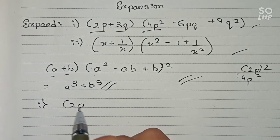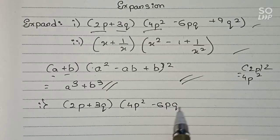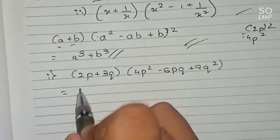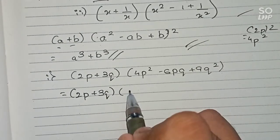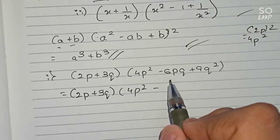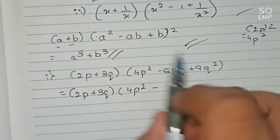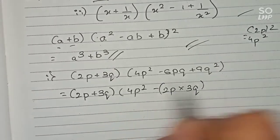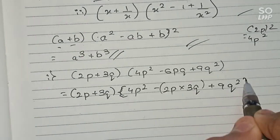Question one says: (2p + 3q) multiplied by (4p² - 6pq + 9q²). Before writing the formula, we arrange the equation: first bracket is (2p + 3q), multiplied by the second bracket showing the 'ab' portion — that is 2p multiplied by 3q — giving minus 6pq, plus 9q².